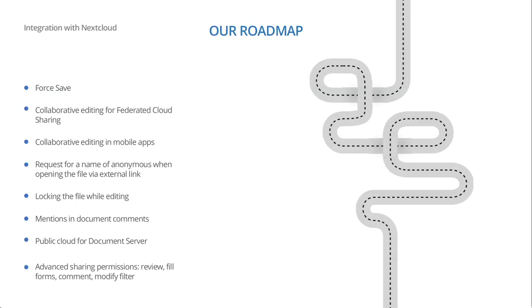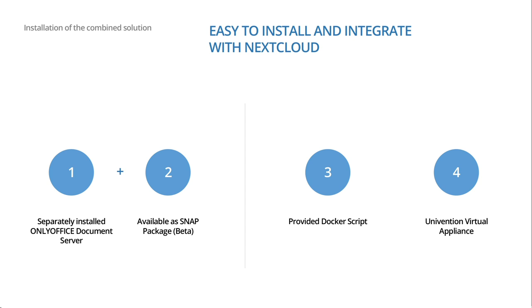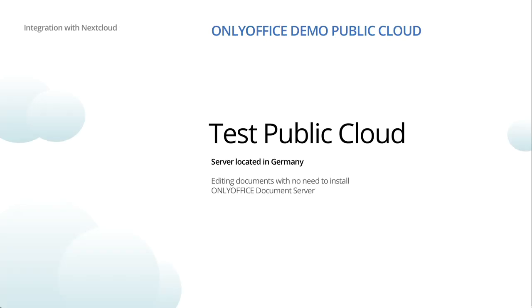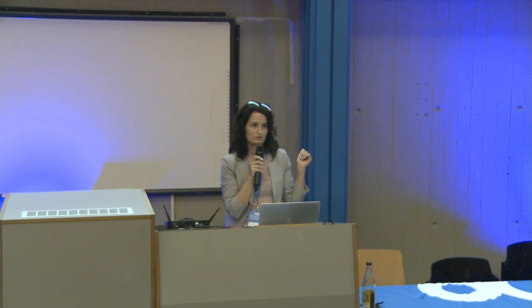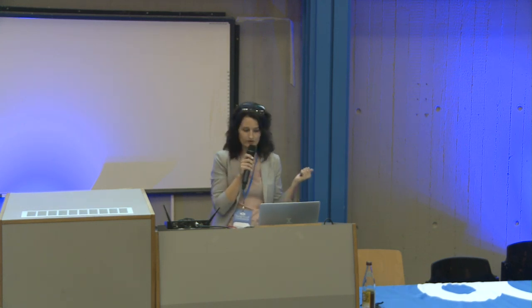We have many features planned for the Nextcloud connector, like ForceSave and advanced sharing permissions. The idea is to make Nextcloud work even more securely with your documents. You can install OnlyOffice via any option on our GitHub — Snap, Docker script, Univention, or others. You can also test the software without installing via our test cloud — just connect your Nextcloud to the latest version of the Nextcloud connector and our public test cloud to see how OnlyOffice works within Nextcloud.